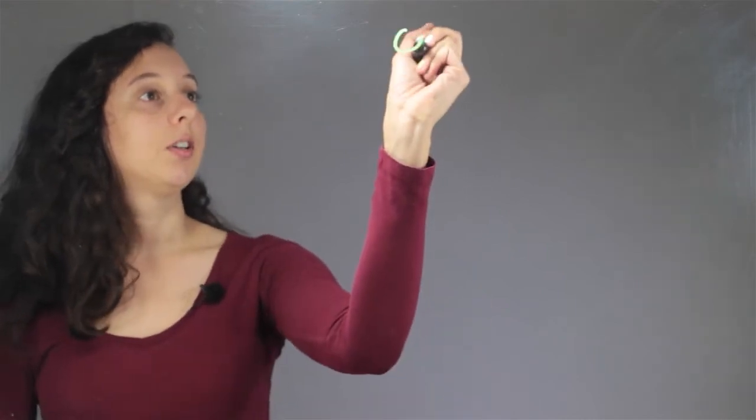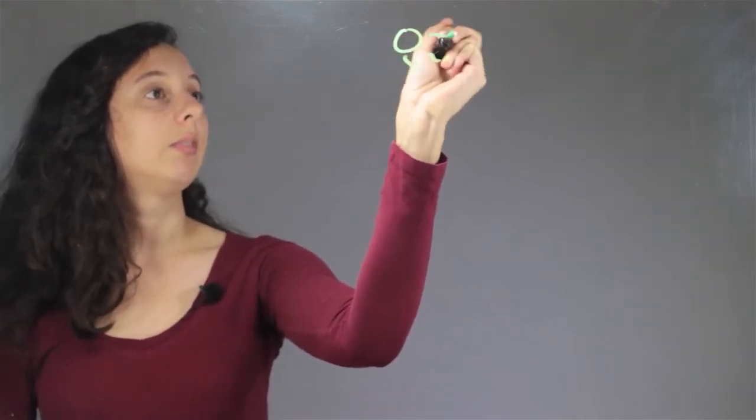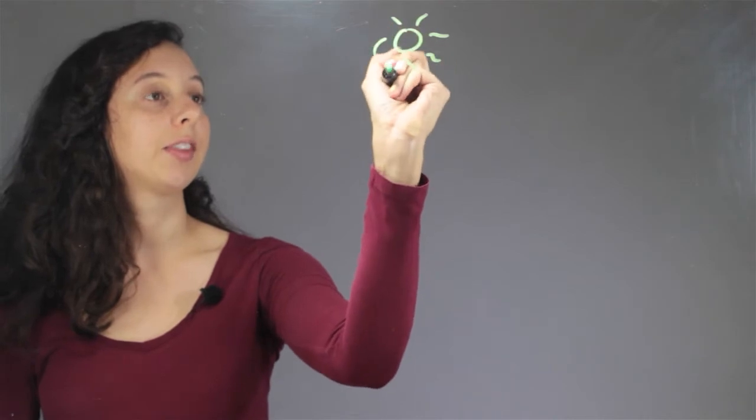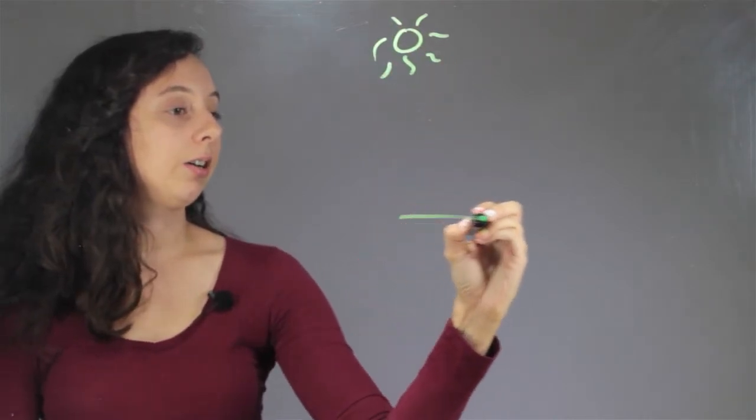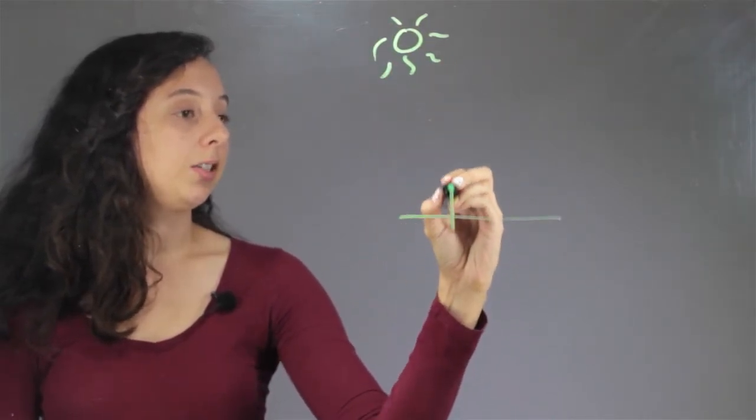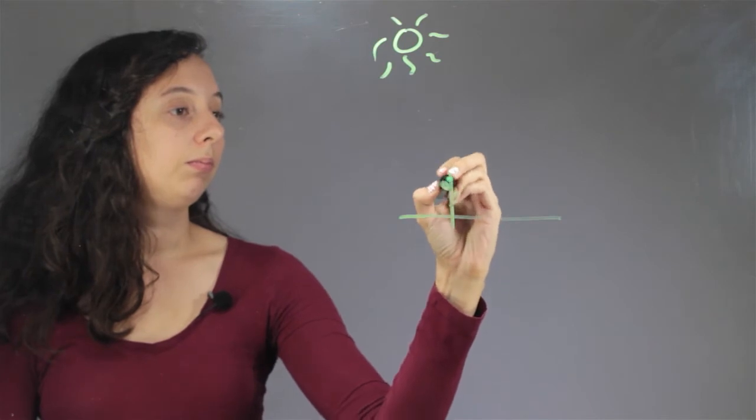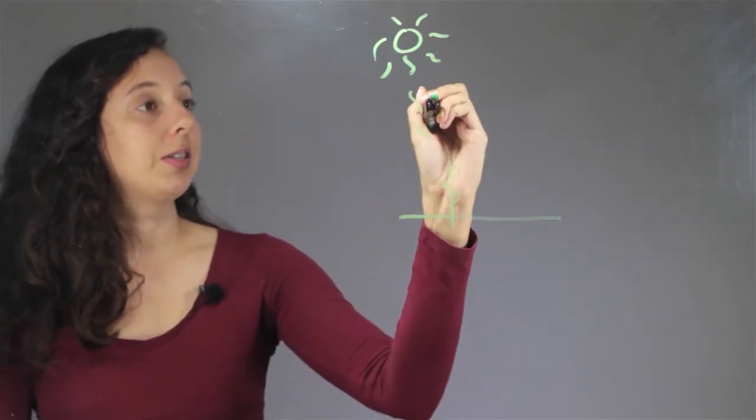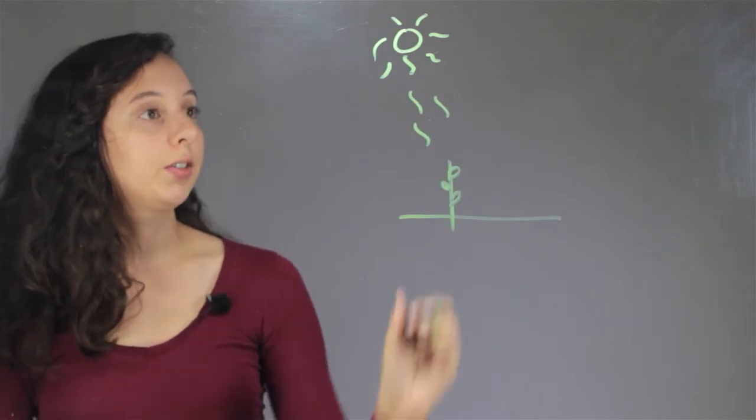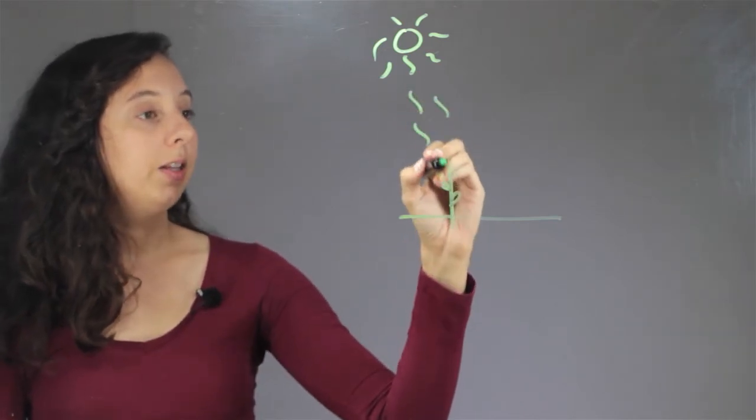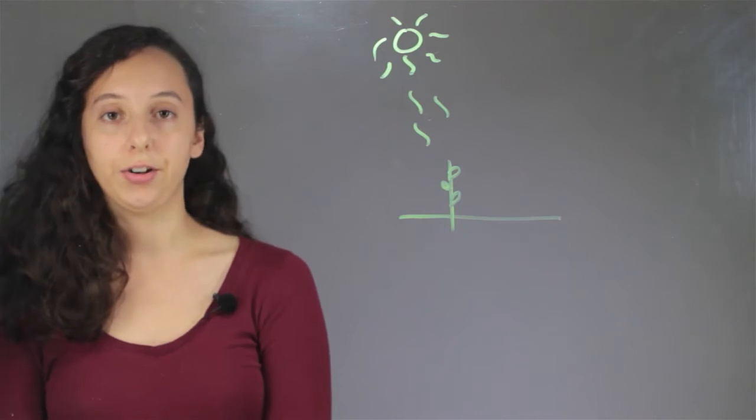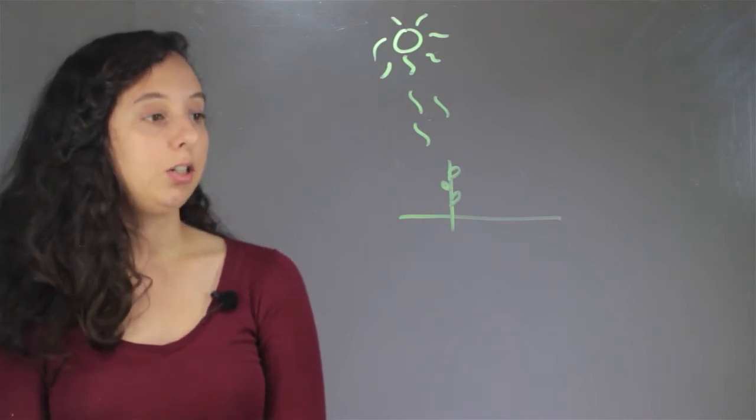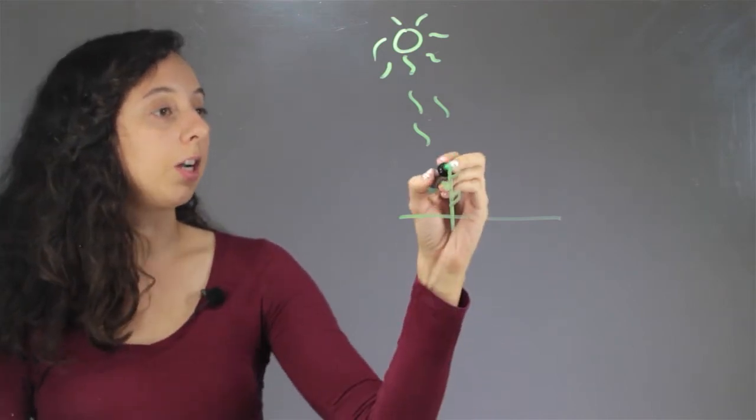So during photosynthesis, we have the Sun gleaming in the sky, and then down here on Earth, we have a little plant. Photosynthesis is when the Sun comes down and the plant absorbs the Sun's energy and turns it into energy for itself so it can grow some more.